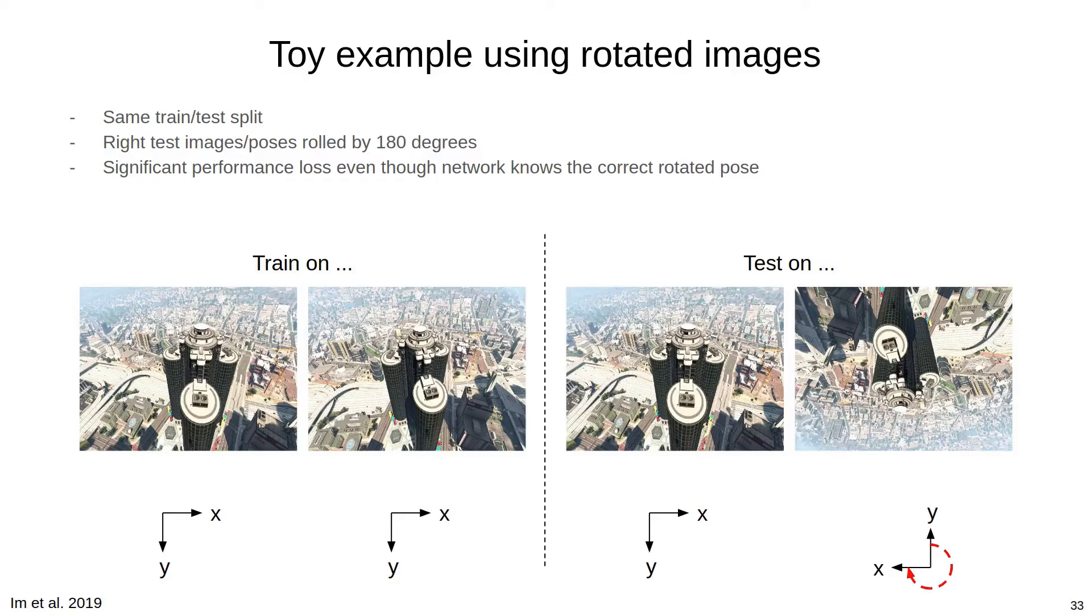A similar example of this problem can be shown by applying a roll operation between the training and testing sets of a learned MVS system. Given a learned MVS network that performs well on a given training and testing split, all that it usually takes to break the system and incur a massive drop in performance is to roll the images in the test set by 180 degrees. So we train up the network with the images on the left, but test the network with images on the right. Most learned MVS networks will not handle the simple transformation of the input gracefully.